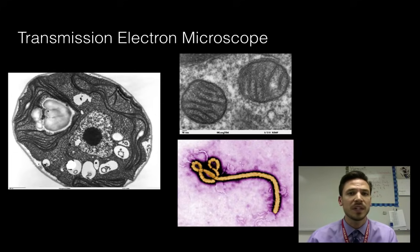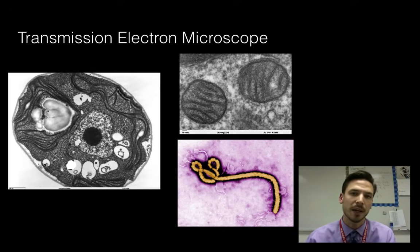So same thing with the scanning electrons. Some of the pros is we're going to get high magnification, high resolution images. Transmission electrons can get up to about 10 million times magnification. There have been some that have gotten down to the atomic level, so we've seen actually single atoms with these microscopes. So they're very, very powerful. But again, some of the downsides to it, expensive, and we can only look at dead objects, and our images are going to be in black and white.